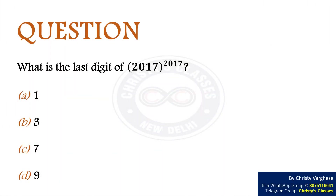In this video, let us discuss a question on powers. What is the last digit of 2017 to the power 2017? Options: a. 1, b. 3, c. 7, d. 9.